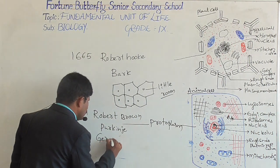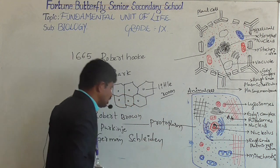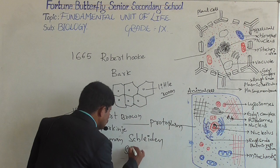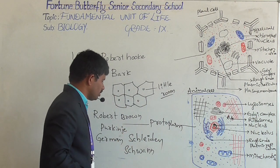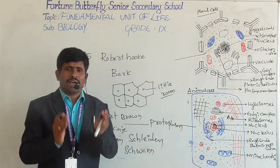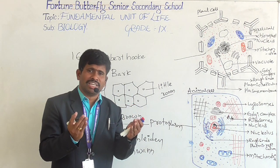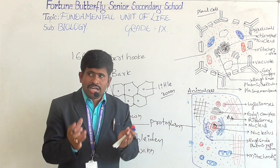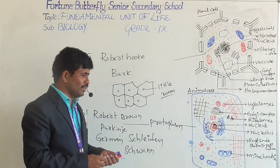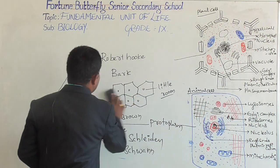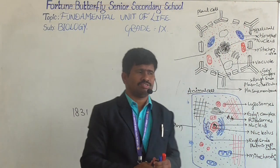Later, two German scientists — Schleiden, a botanist, and Schwann, a zoologist — together proposed the cell theory. According to cell theory: every living organism is made up of a number of cells; all cells are made up of the same chemicals and carry out the same metabolic activities.